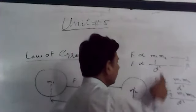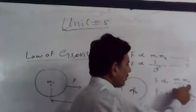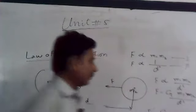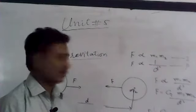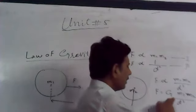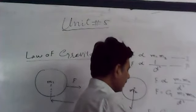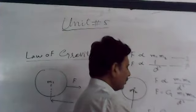So F is proportional to M1 M2 over D squared. To convert this proportional sign into an equation, a constant G is introduced. G is the gravitational constant. Therefore, F is equal to G M1 M2 over D squared. The value of G is 6.673 into 10 raised to power minus 11.